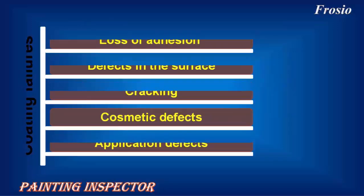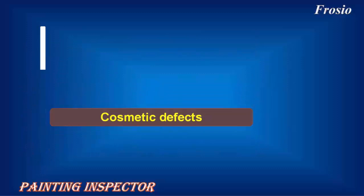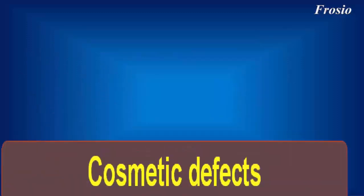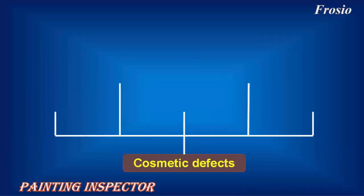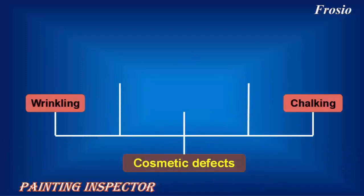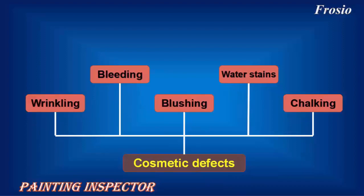Number 4: Cosmetic Defects. Cosmetic Defects include Wrinkling, Chalking, Water Stains, Blushing, and Bleeding.